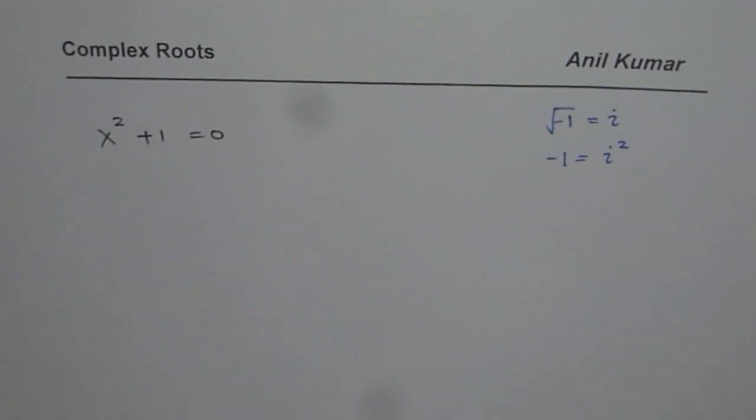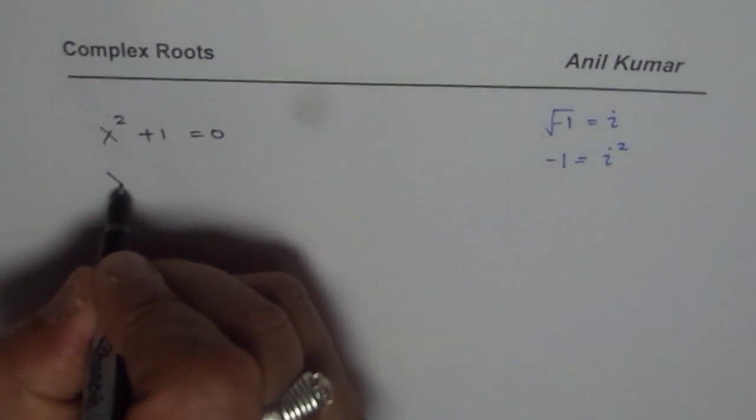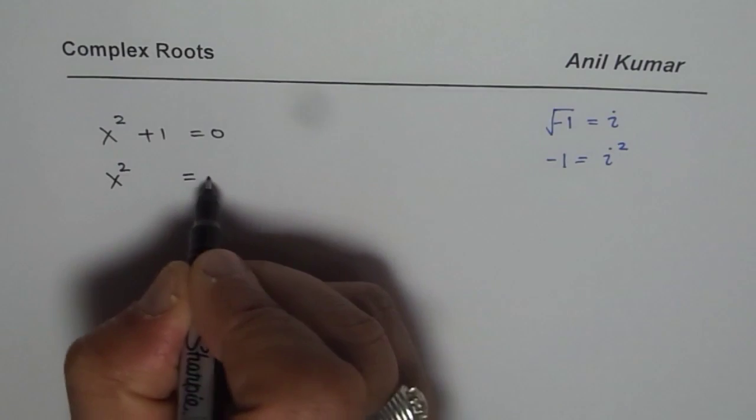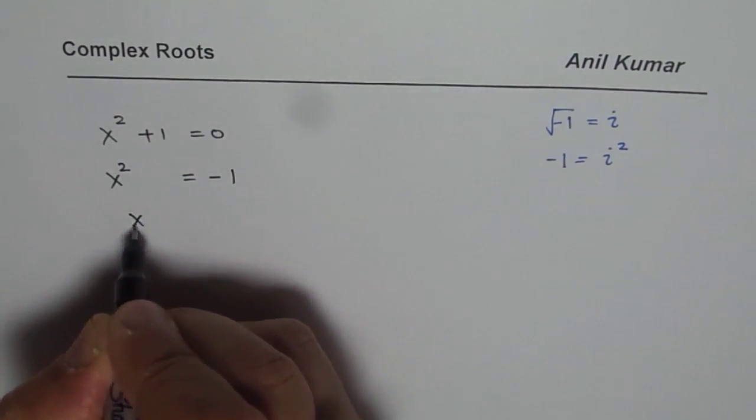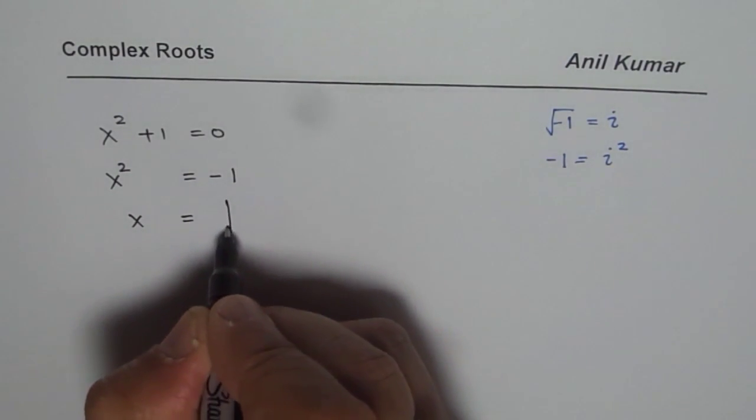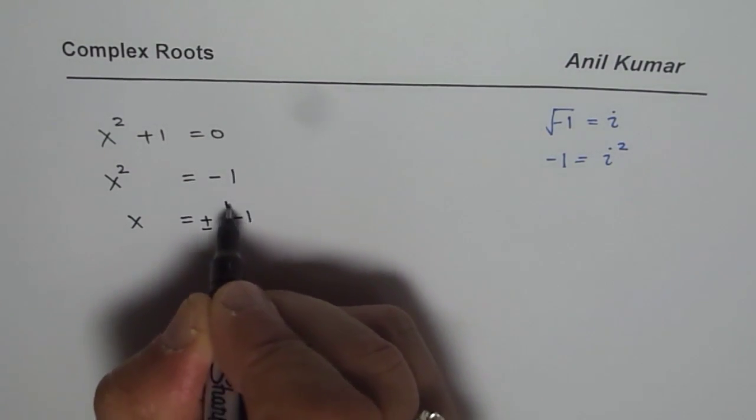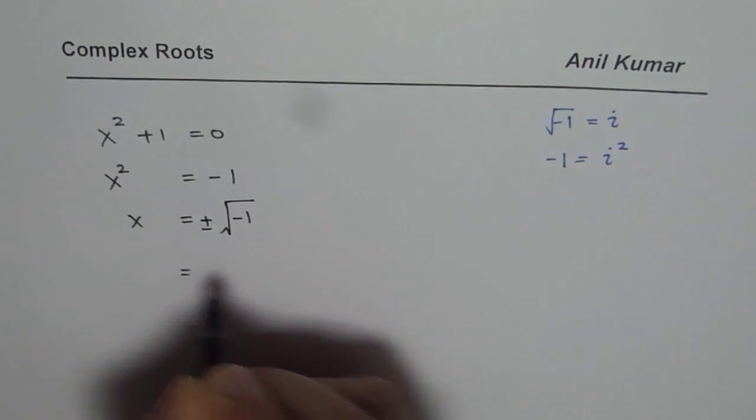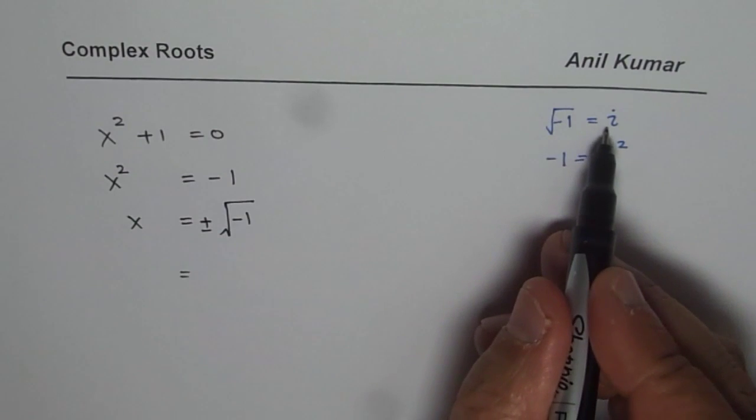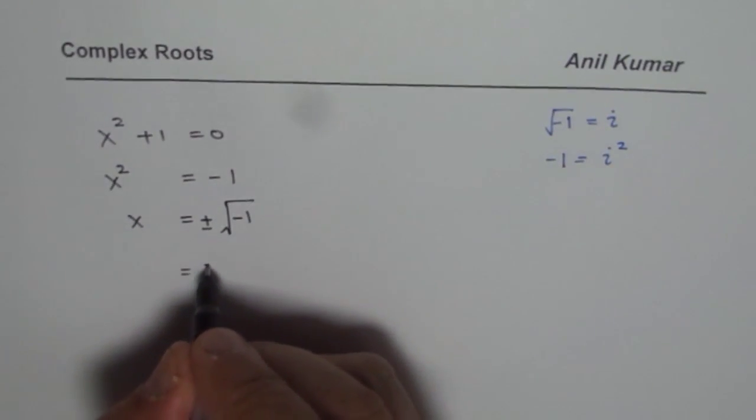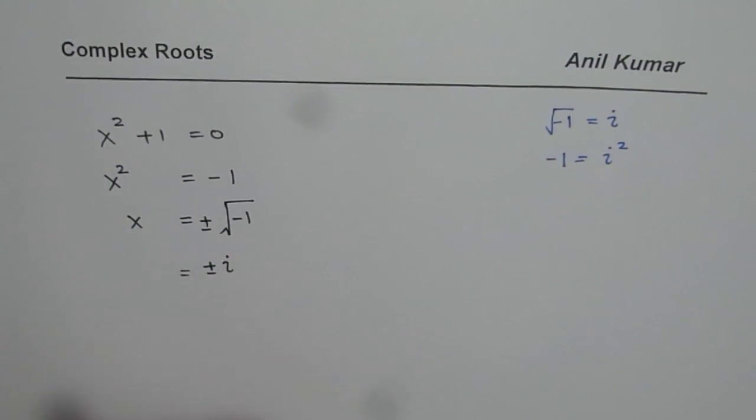So in this particular case, we can say x² is equal to minus 1 and x is equals to square root of, of course plus and minus, minus 1. And as you know, square root of minus 1 is i, so we can write this as plus minus i.